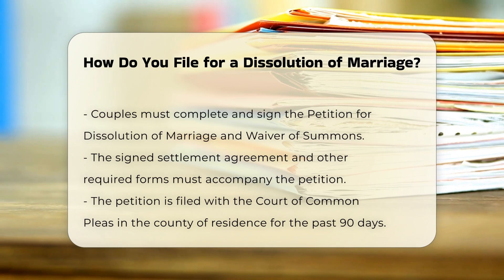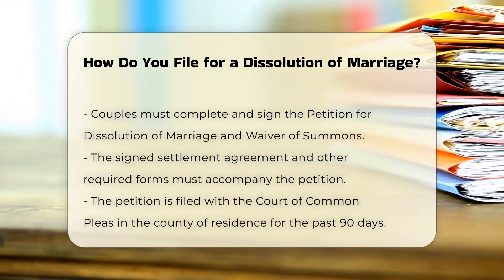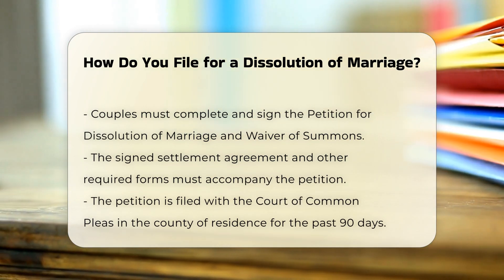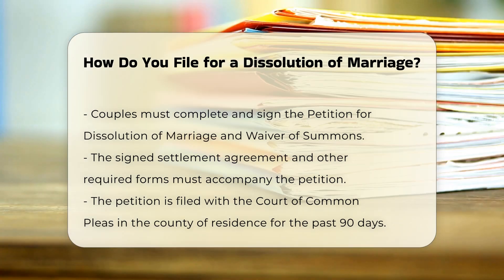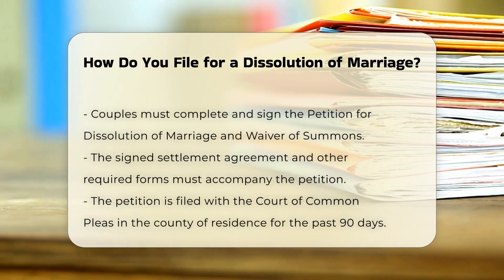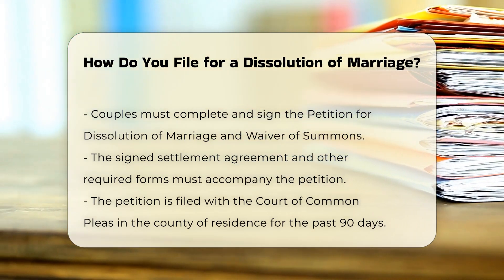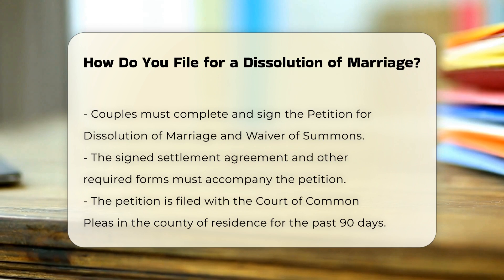Document preparation: You and your spouse will need to fill out and sign the petition for dissolution of marriage and waiver of summons. You must attach your signed settlement agreement along with other required forms. It is advisable to check with the court clerk's office to see if the county has additional forms or requirements. The petition and other paperwork must be filed with the court of common pleas in the county where either of you has lived for the past 90 days.